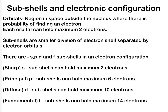Today we are going to study about electronic configuration. Orbitals are regions in space outside the nucleus where there is a probability of finding an electron. Each orbital can hold a maximum of two electrons. Subshells are smaller divisions of an electron shell separated by electron orbitals. In grade 9 or grade 10 you studied about electron arrangement in atoms, arranging electrons in shells or orbits. Here we are going to arrange electrons in subshells.